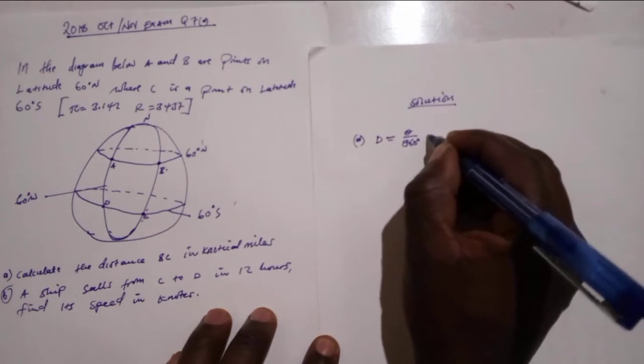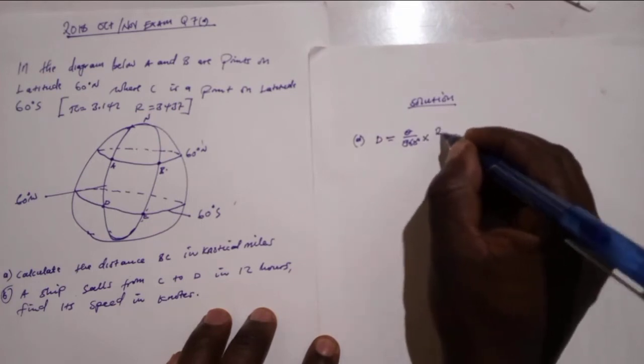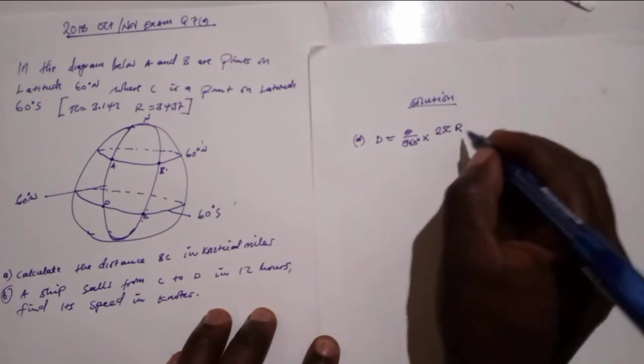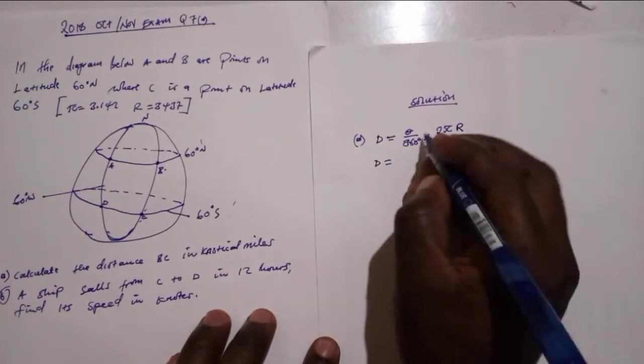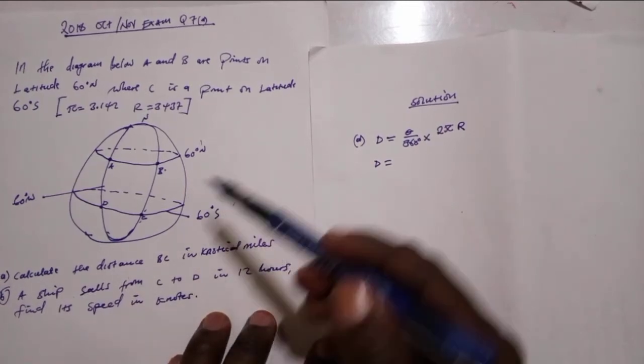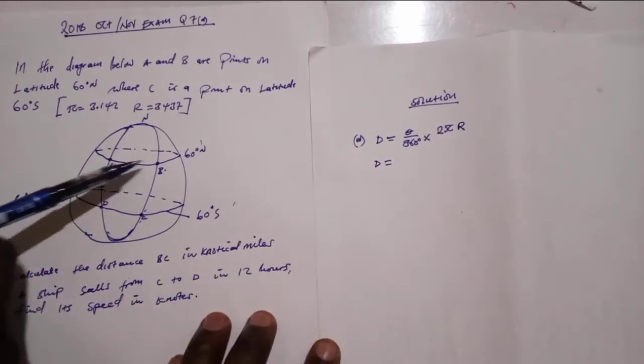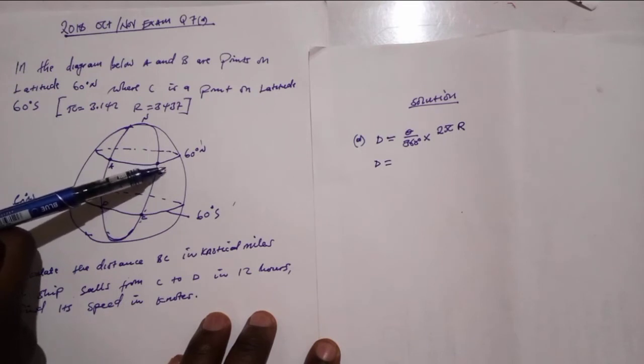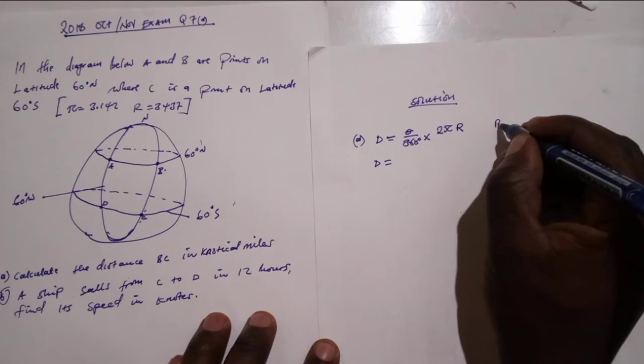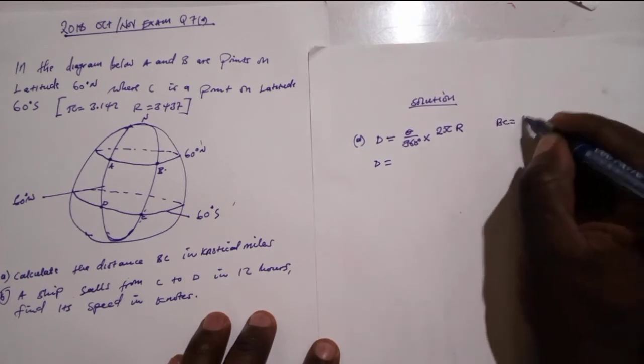Let's substitute. Theta - for us to find theta, we have to add. We are told to find the distance BC, so we have to add. BC is 60.